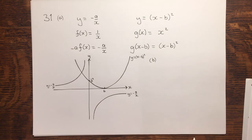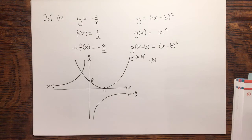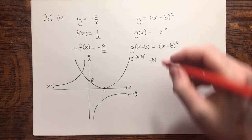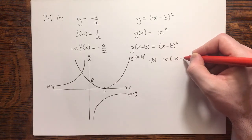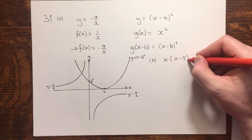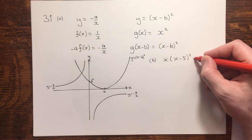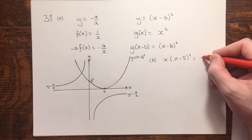So, on to part b. In part b, it says, using your sketch, state the number of real solutions to the equation x times (x minus 5) squared equals minus 7.